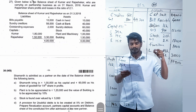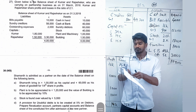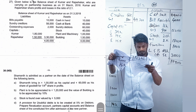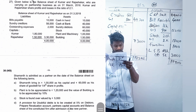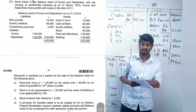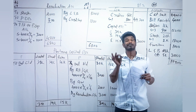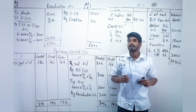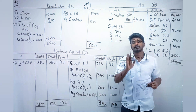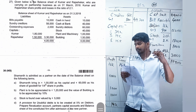Next, the value of building is appreciating by 10%. The balance sheet gives building as 1,50,000, so 10% of 1,50,000 = 15,000 is getting appreciated. We credit it in the revaluation account.